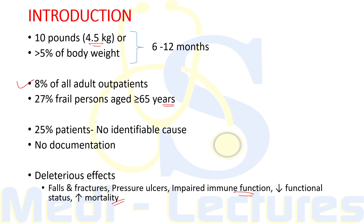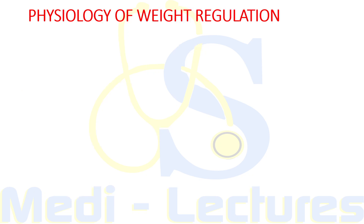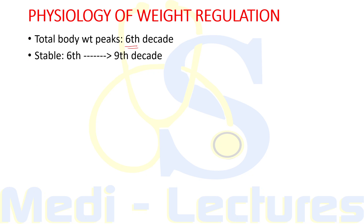Before going to the causes of unintentional weight loss, we will discuss the physiology of weight regulation with aging in detail. Among healthy aging people, total body weight peaks around the 6th decade of life and generally remains stable till the 9th decade, after which it gradually falls.